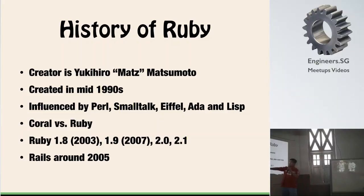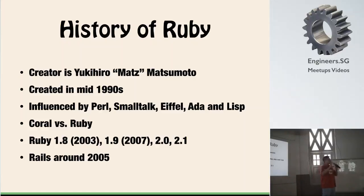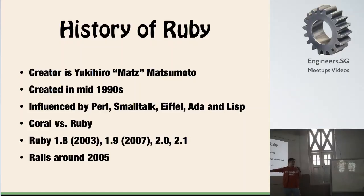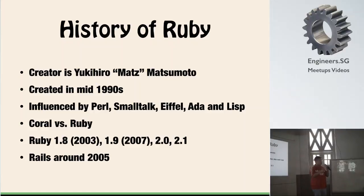Ruby went to version 1.8 in 2003, 1.9 in 2007, and now we are at 2.0, 2.1, even 2.2. Ruby only grew in popularity because of Rails, and that's where the story of Rails comes in. Rails was started in 2005 — that's 10 years ago. It's already considered mature technology. When it's mature, it means it's stable. They just celebrated the 10th anniversary.